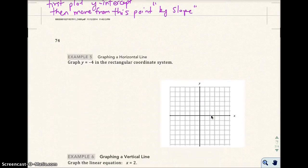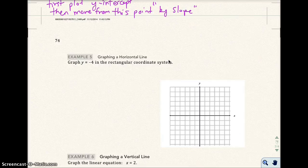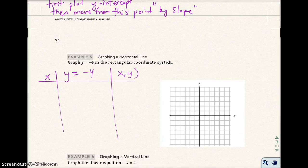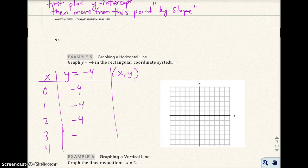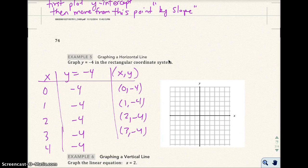Okay, so here we want to graph y equals -4 in the rectangular coordinate system. And notice how there's no x in here. So if I were to make a table, we actually had this in the first chapter. So I can put any value in for x, y is always going to be -4. What's telling me? So I get (0, -4), (1, -4), (2, -4), (3, -4), (4, -4), etc.